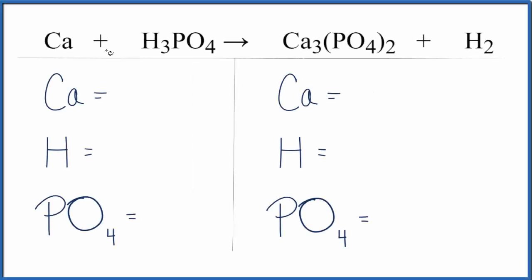In this video we'll balance the equation Ca plus H3PO4 gives us calcium phosphate and hydrogen gas. So let's add the atoms up on both sides.